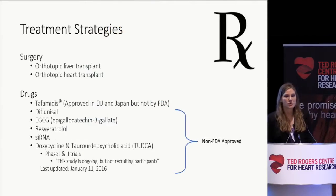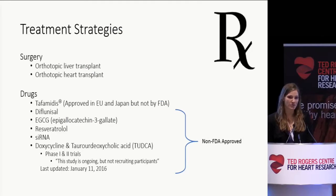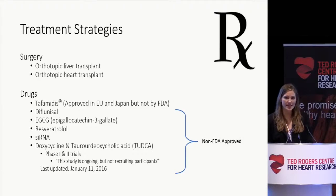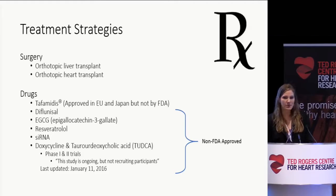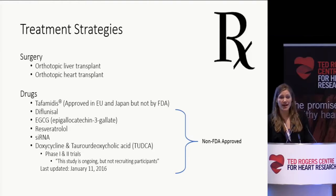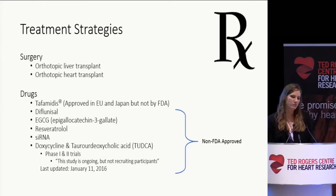What treatment options do patients have? Unfortunately, not many. For those eligible for surgery, they can undergo liver or heart transplant. Many pharmacotherapies have been tried and tested; however, none have been approved by the FDA nor Health Canada. There is one drug called Tafamidis that has been approved in both the EU and Japan, but it reached stage three clinical trials in the U.S. and the FDA did not approve it, though as of 2016 they have not fully rejected it yet. As it stands, the only options available are transplants.